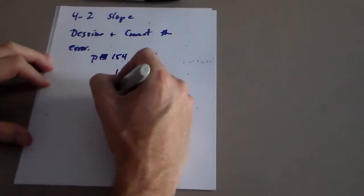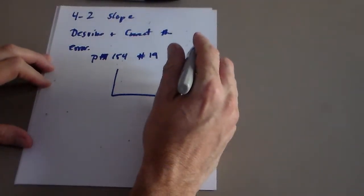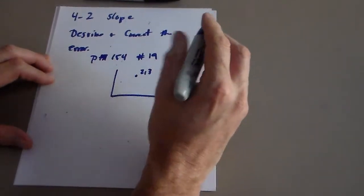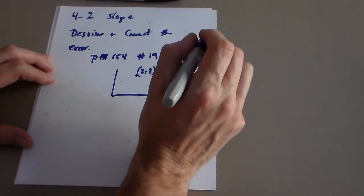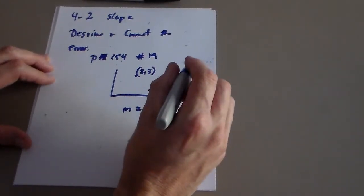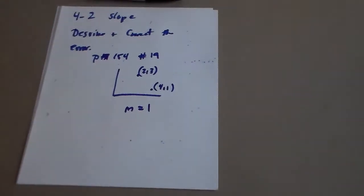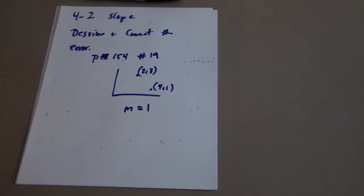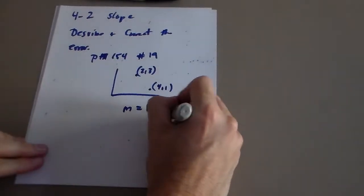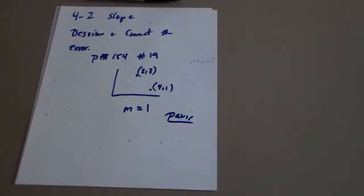They have a picture — I'll do my best to recreate it. They have a point at (2, 3) and a point at (4, 1), and they say that the slope is 1. I'd like you to take a look at that, see what you think, see if you agree. If you don't agree — which you shouldn't, because there's a mistake — try to pick out what the mistake is and do it correctly. Pause the video and give that a shot.